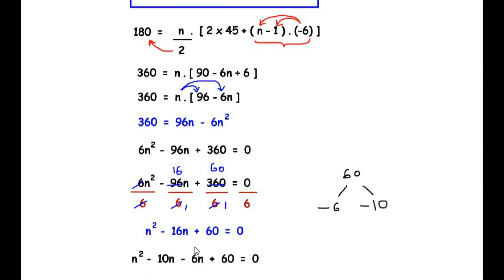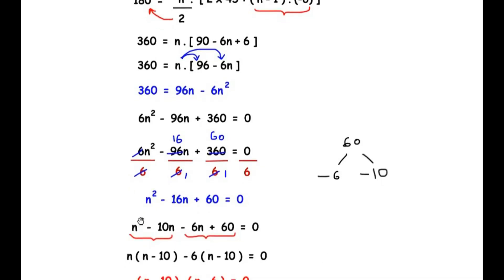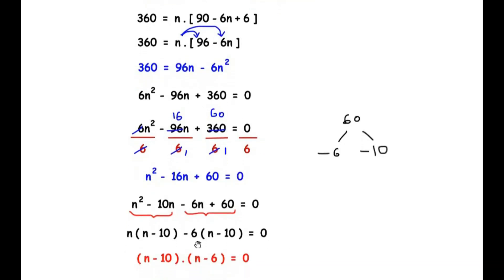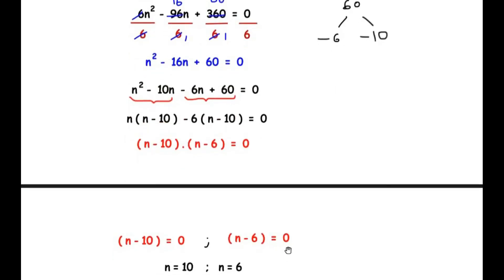We split these four terms into two groups. From the first two terms, n is a common factor, giving n(n − 10). From the last two terms, we pull out −6, giving −6(n − 10). So the equation becomes: (n − 10)(n − 6) = 0. Equating each factor to zero: n − 10 = 0 gives n = 10, and n − 6 = 0 gives n = 6.